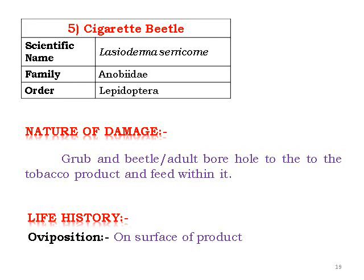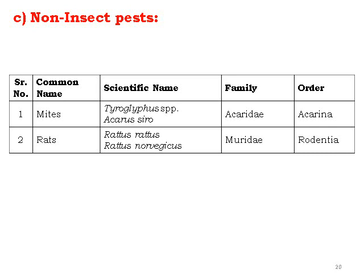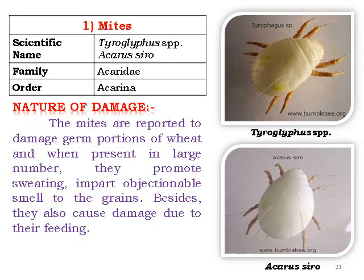Non-insect pests include mites and rats. Mites such as Tyrophagus, Acarus, and Glycyphagus species cause damage to the germ portion of the grain. When present in large numbers, they promote sweating and impart an objectionable smell on the grains. They also cause damage directly and indirectly to processed food parts.